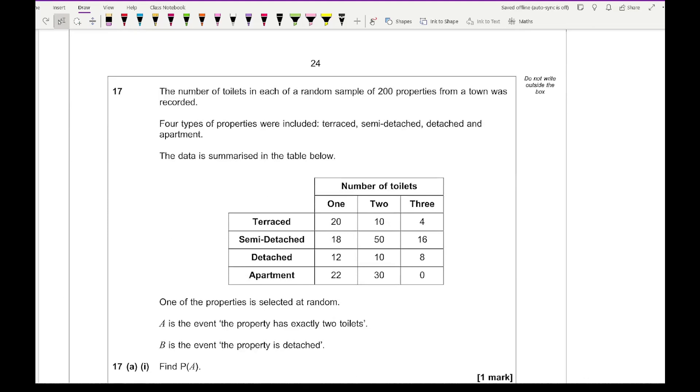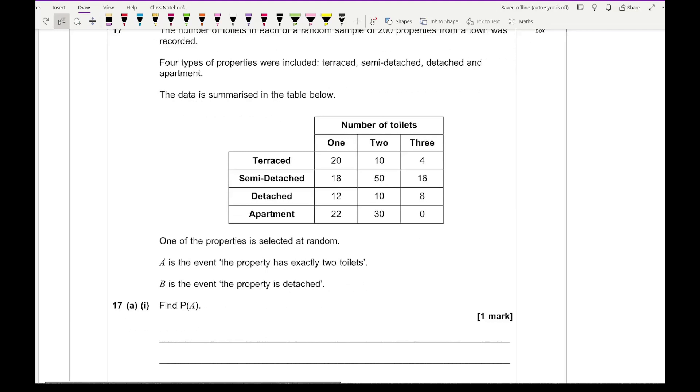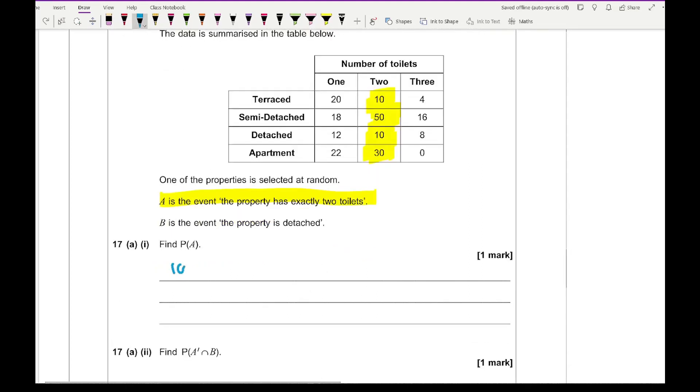Moving on to question 17, it says the number of toilets in each of a random sample of 200 properties from a town was recorded. Four types of property were included: terraced, semi-detached, detached, and apartment. The data is summarized in the table below. One of the properties is selected at random. A is the event that the property has exactly two toilets, and B is the event that the property is detached. For part AI, it says find the probability of A. The probability of A is the event that a property has exactly two toilets. So I'm looking for anything in that green column. If I add the numbers in the green column - 10 plus 50 plus 10 plus 30 - that adds up to 100. We have that over 200, giving me my final answer of 0.5 or a half.